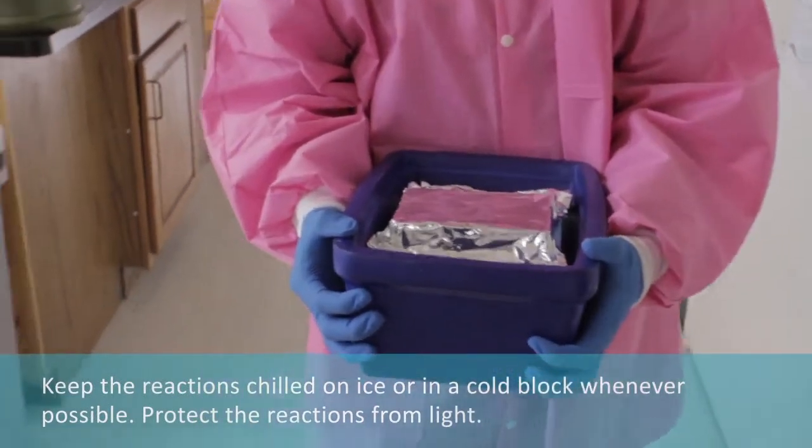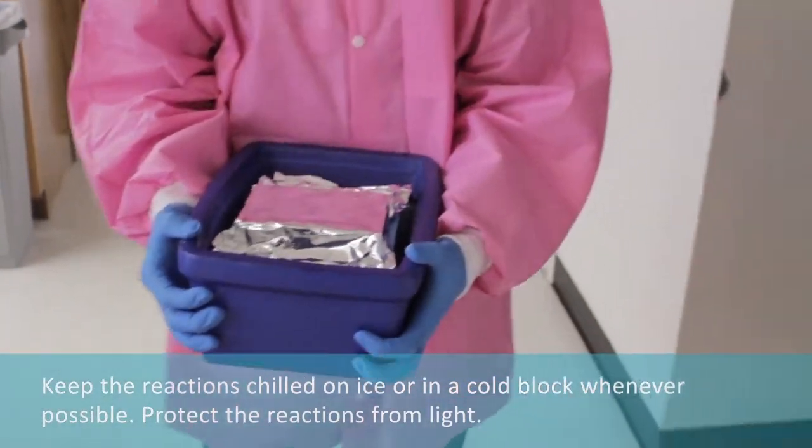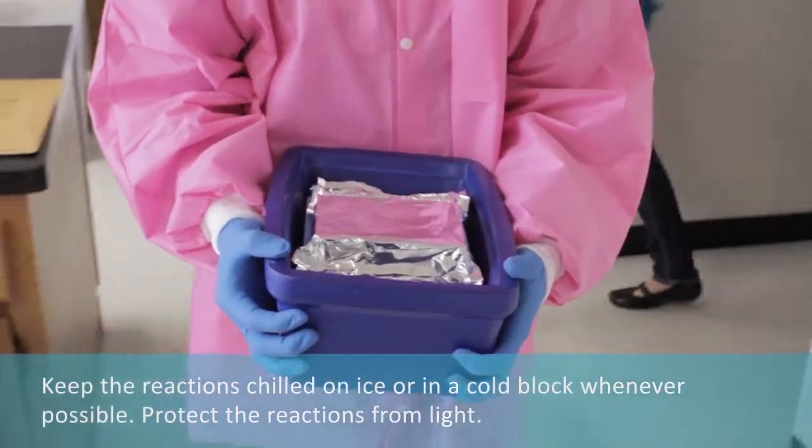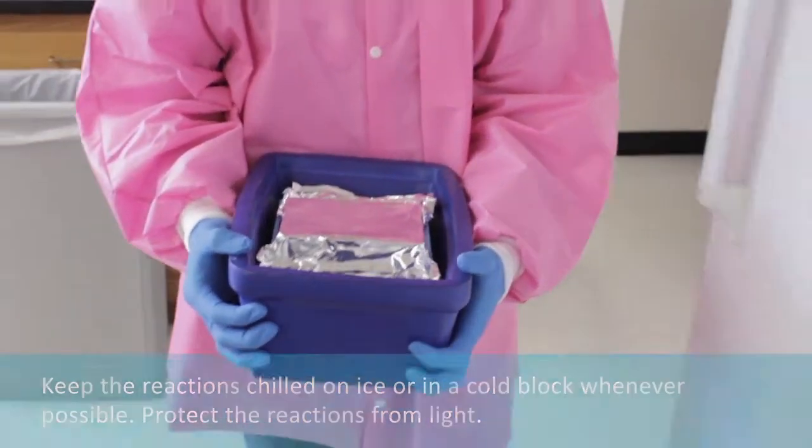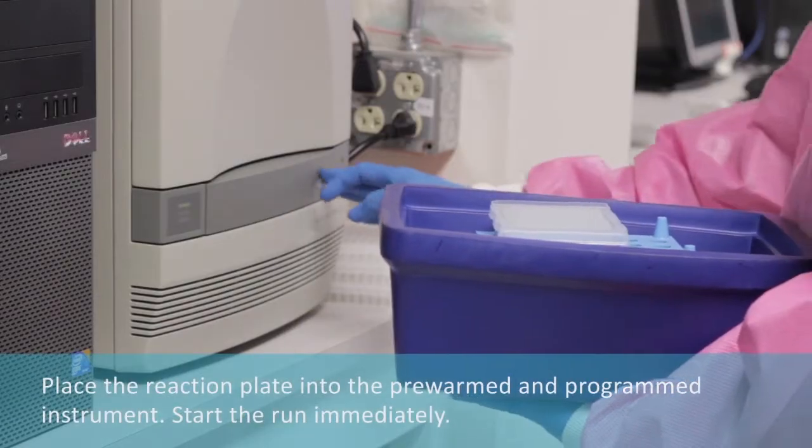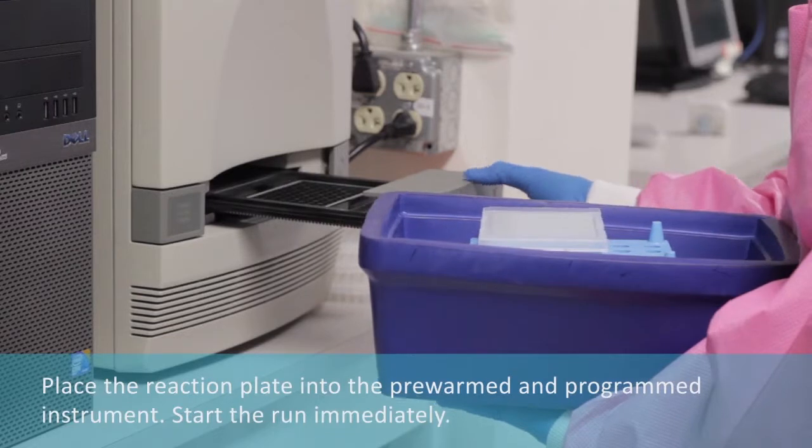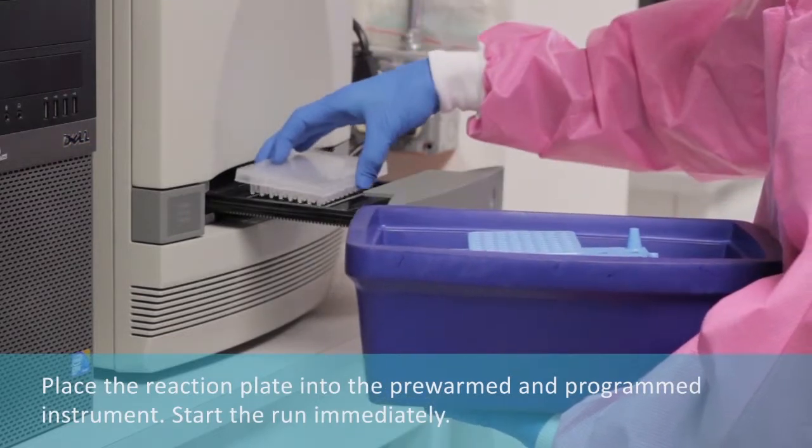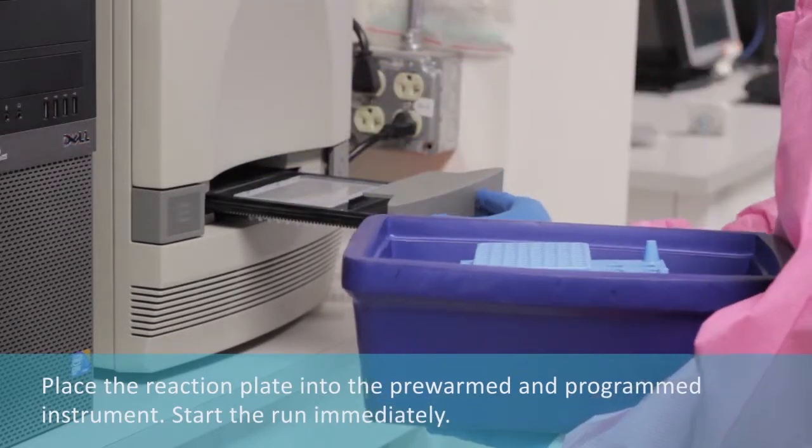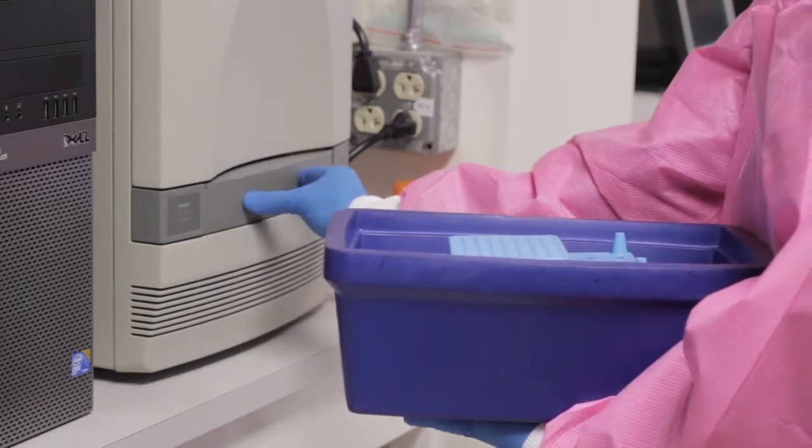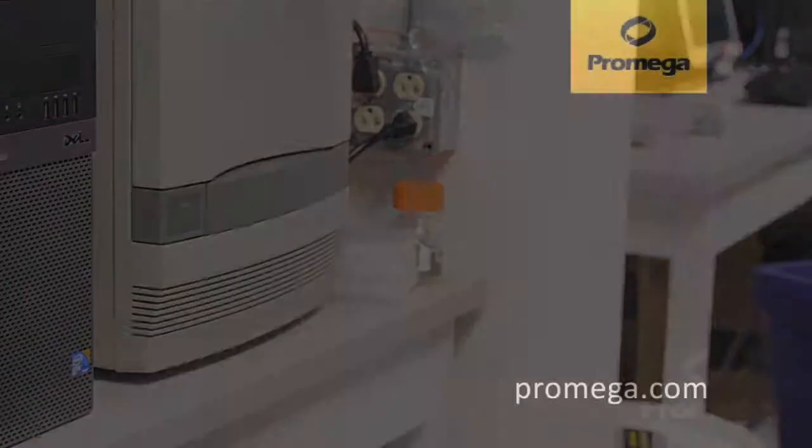Keep the reactions chilled on ice or in a cold block whenever possible. Protect the reactions from light. Place the reaction plate into the pre-warmed and programmed thermal cycler. Start the run immediately.